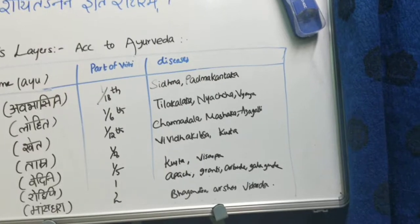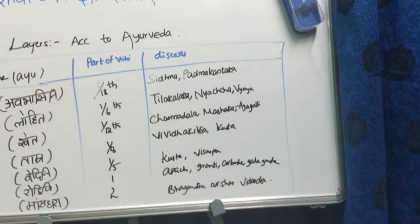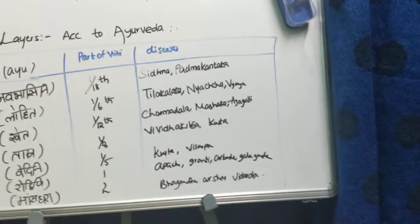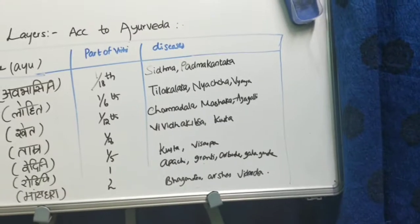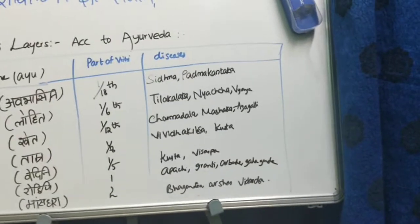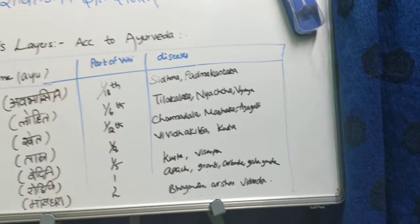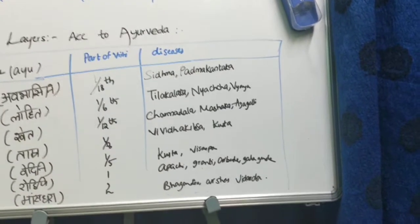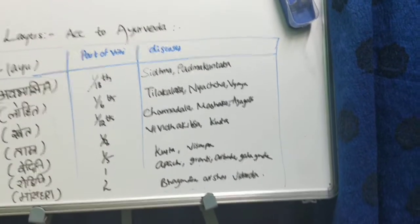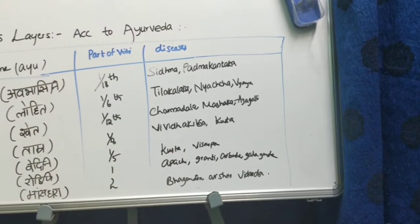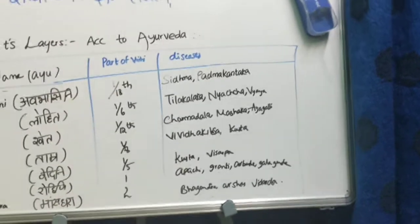Rohini layer has one part of Rihi. Diseases of this layer include Apchi, Arbuda, Granthi, and Galaganda. Mansadara is the seventh layer of skin with two parts of Rihi. Its diseases are Bhagandara, Arshas, and Vidartha.